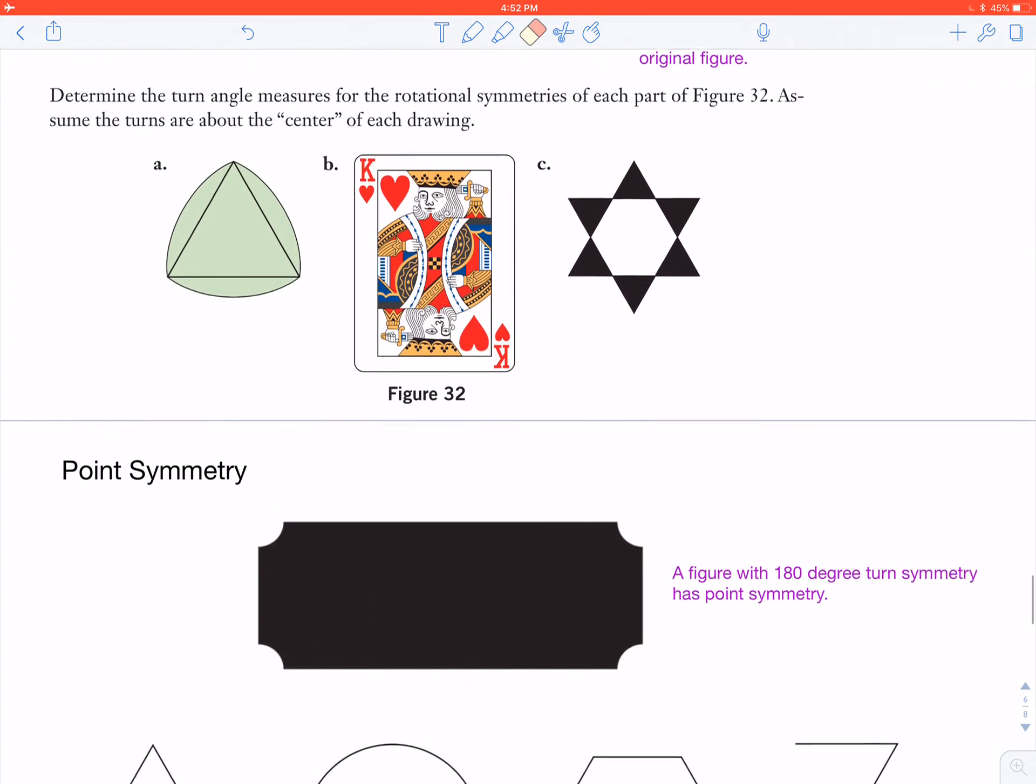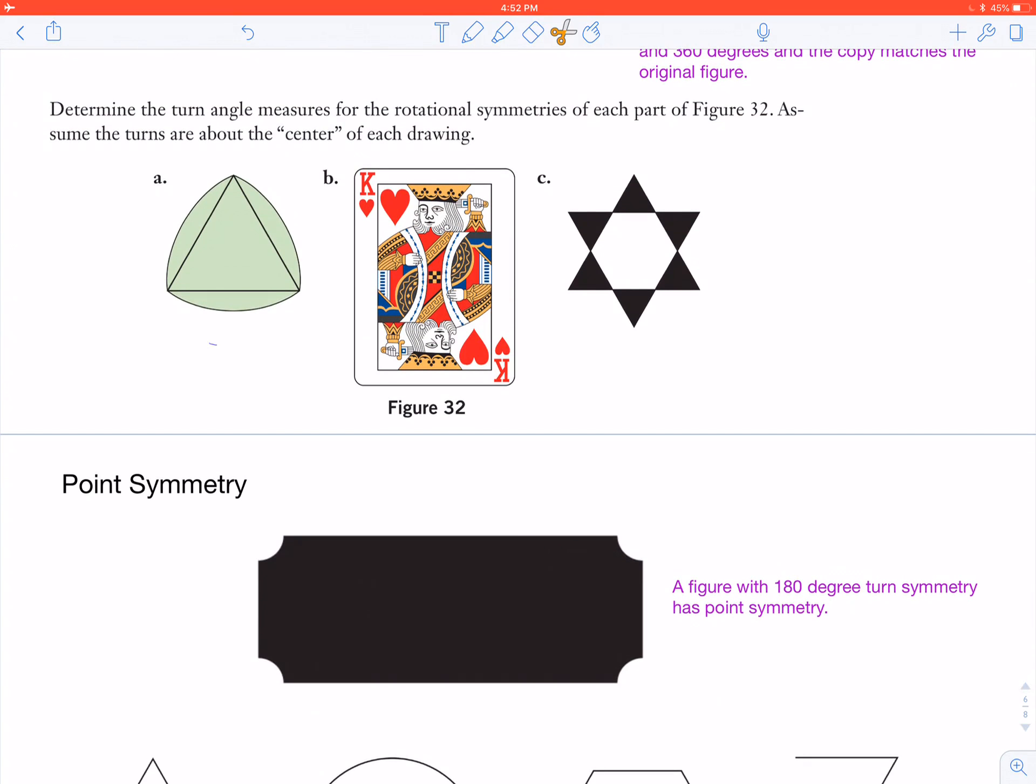If you'll go back a little bit, if you'll look at my example A here, if you turn this guy upside down, you do not get the same figure back. So it does have rotational symmetry because I can rotate it a certain amount and get the same figure, but it does not have point symmetry.